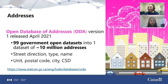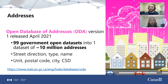We also have an Open Database of Addresses, released in April of 2021. This includes 99 different government open datasets — primarily from municipalities but also provinces — totaling over 10 million addresses. It contains basic address information: street number, street name, units if available, postal code if available, city, census subdivision, provider, and geocoordinates. The whole point of this dataset is to know the geocoordinates of as many addresses in Canada as we can find. It comes with metadata giving proper attribution to all sources.